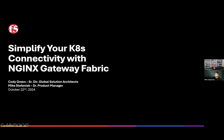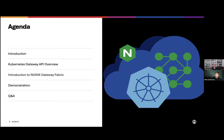So team, we're going to talk to you a little bit today about the NGINX Gateway Fabric, but we're going to start with an overview of what the Kubernetes Gateway API is, why it was created, some of the challenges that it helps to address. We'll go into detail about F5's implementation of the Kubernetes Gateway API, and then we'll jump into a quick demonstration.